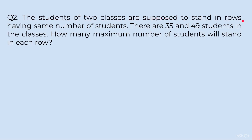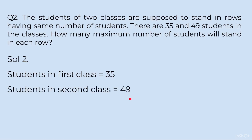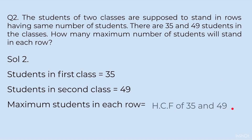Question 2: Students of two classes stand in rows with the same number of students; 35 and 49 students in each class. How many maximum students will stand in each row? We find the HCF of 35 and 49, because the number per row will be less than 35 and 49 — we need a smaller number, so we find factors, specifically the highest common factor. Maximum also confirms HCF. Students in first class = 35, students in second class = 49. Maximum students per row = HCF of 35 and 49.